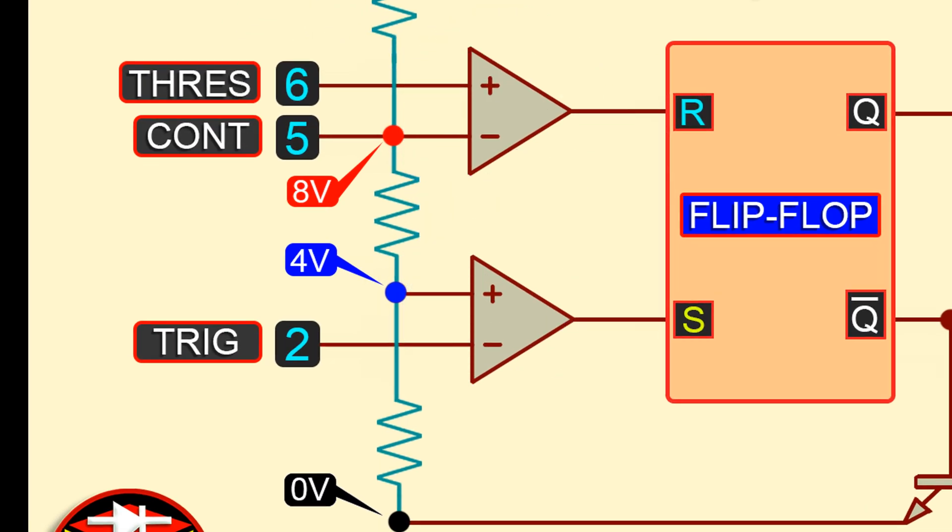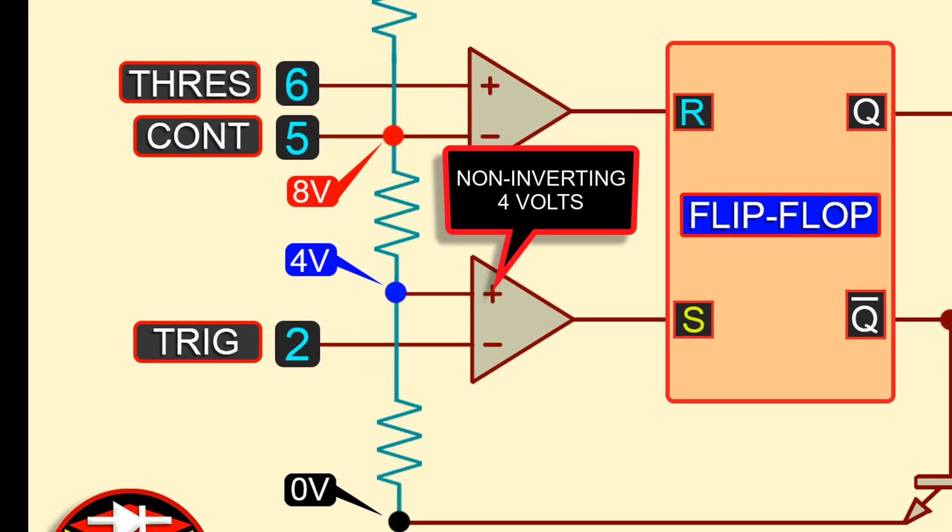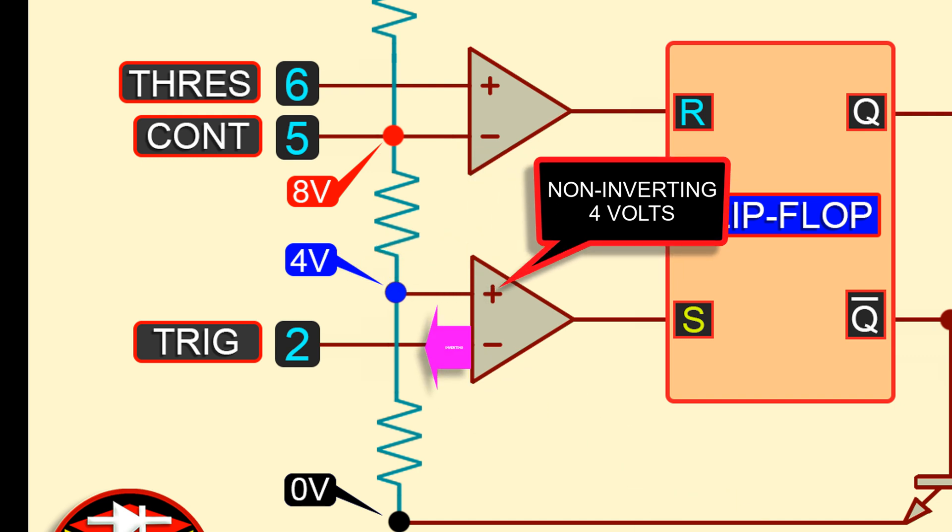Now, look here. The non-inverting terminal of the comparator 2 is connected to 4 volts. And, the inverting terminal is connected to the trigger pin of 555 IC.